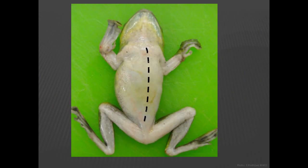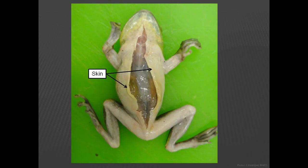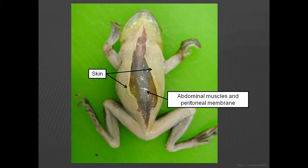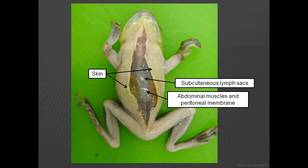To start a necropsy, place the animal in dorsal recumbency and perform a superficial incision that extends from the pectoral area to the inguinal region. Reflect the skin to the sides, which exposes the abdominal muscles and the peritoneal membrane. The potential space that exists between the skin and the body wall is the subcutaneous lymph space. Under certain disease conditions or impaired osmotic balance, this space may become filled with fluid, and samples of this fluid, if present, may be collected for cytology and culture.